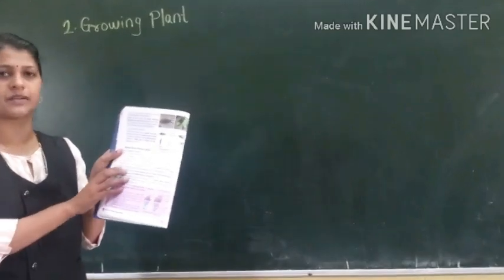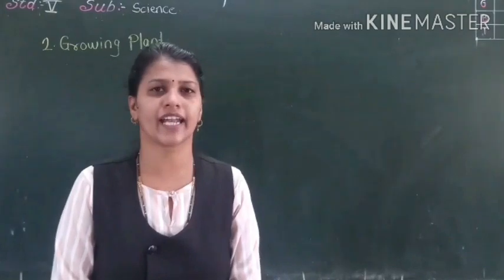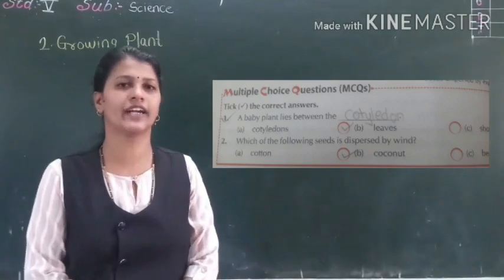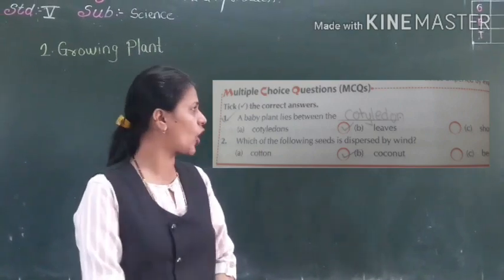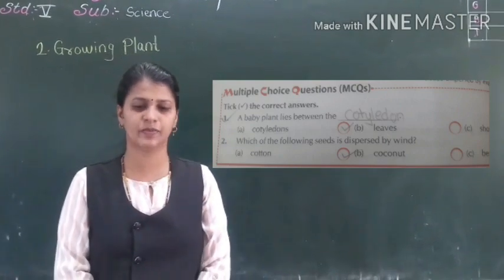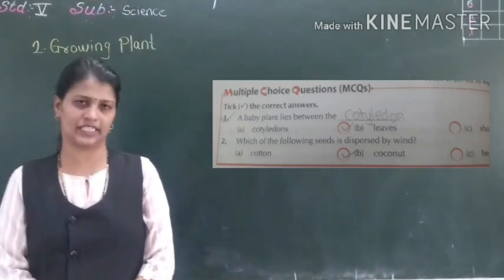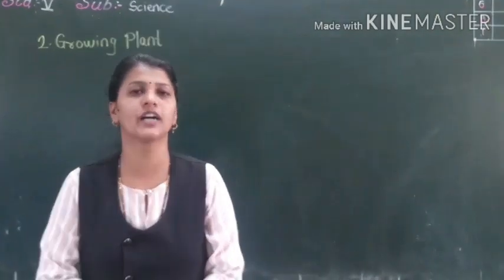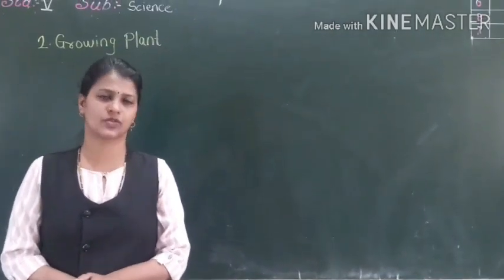Now we will solve some MCQs from the textbook. First: a baby plant is found between the cotyledons — tick cotyledons. Second: which of the following seeds is dispersed by explosion? The answer is bean — tick bean. In the next video, we are going to learn how plants grow from different parts of plants. Thank you.